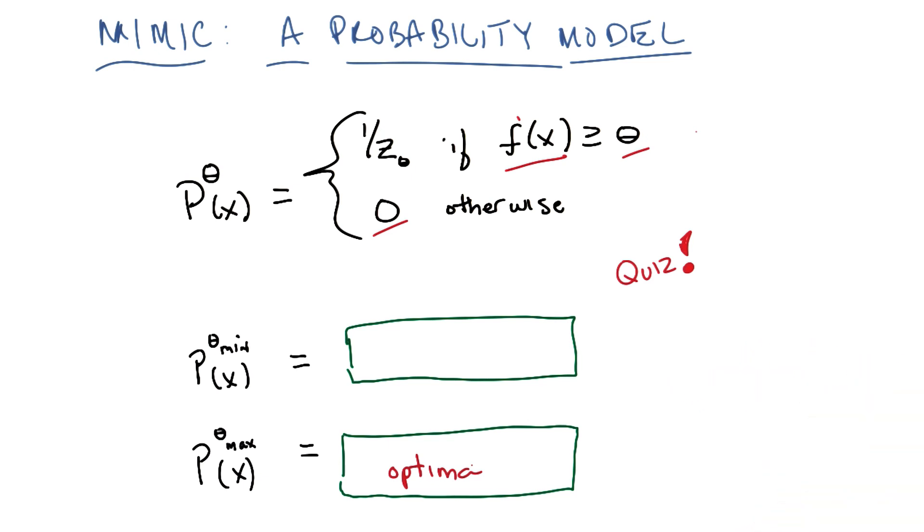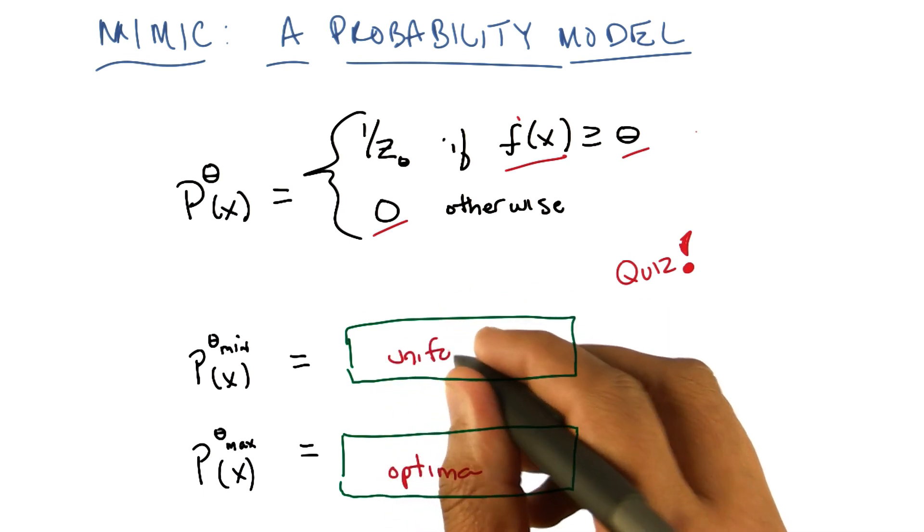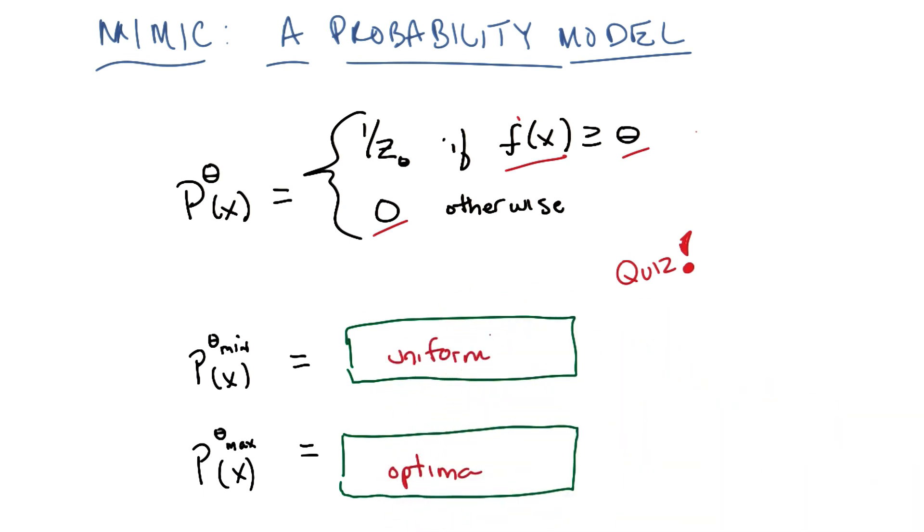So if it's the minimum value that the function can achieve, then it ought to be the case that everything in the space of x's is part of that. So it should assign uniform probability to all points in the input space. That's exactly right. So it is in fact simply the uniform distribution. Nice.